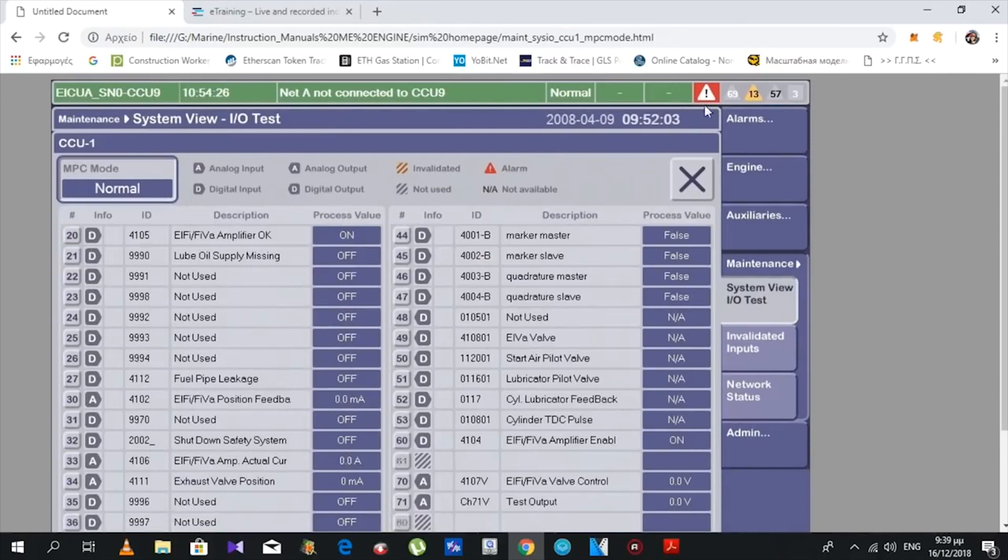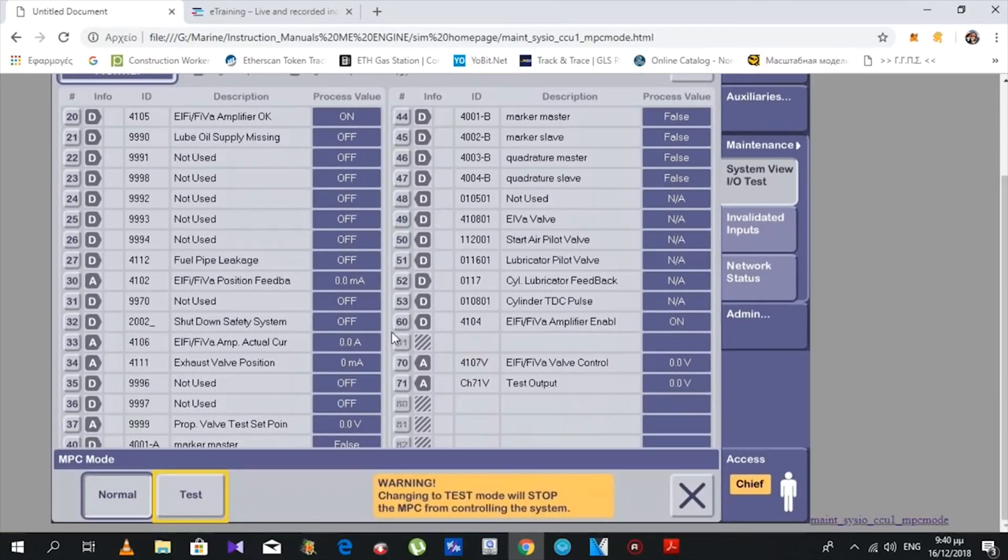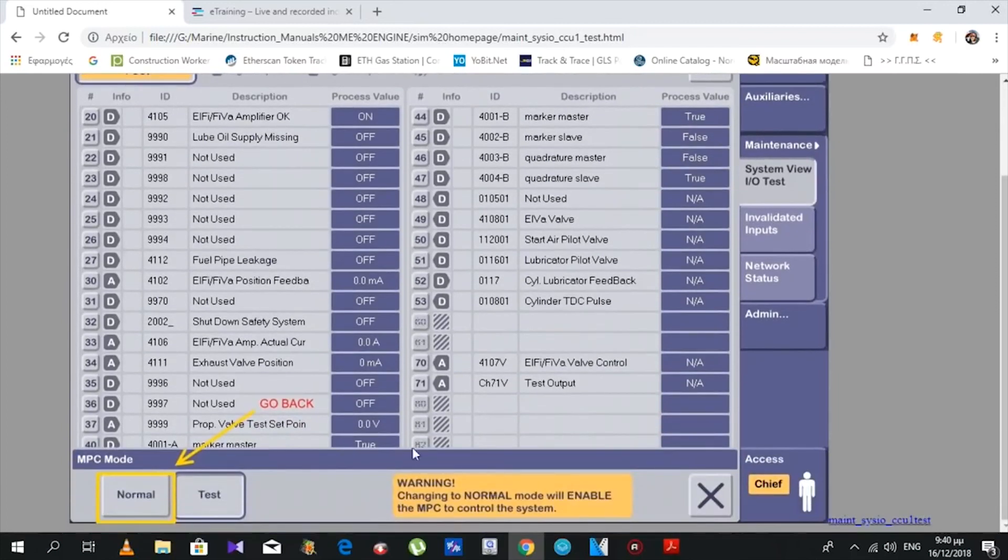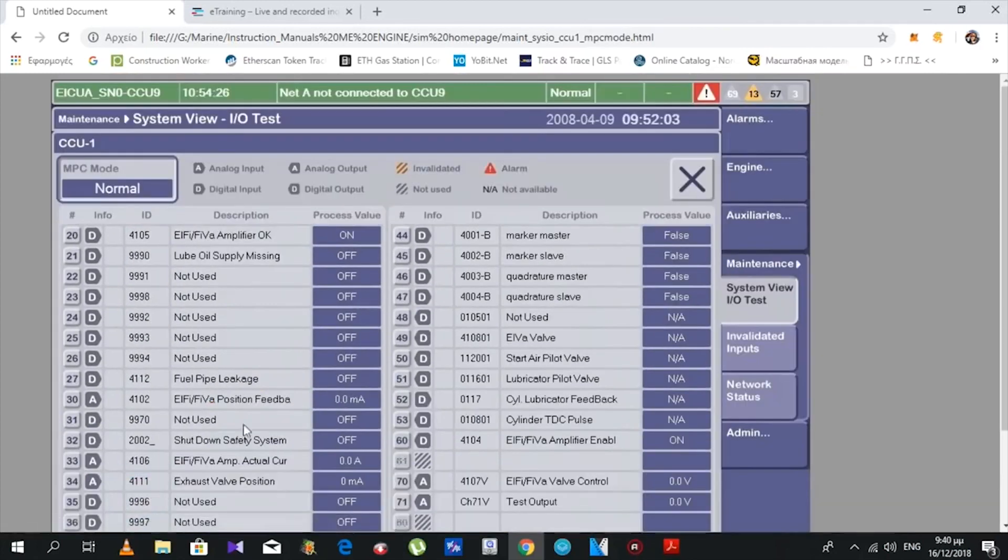Changing to test mode will stop the NPC from controlling the system. All tests must be done carefully. We have an indication here that we're in test mode. There's also a description. Then we go again to normal mode.